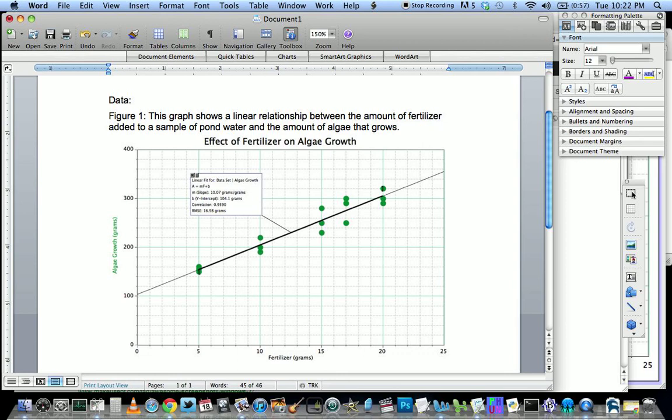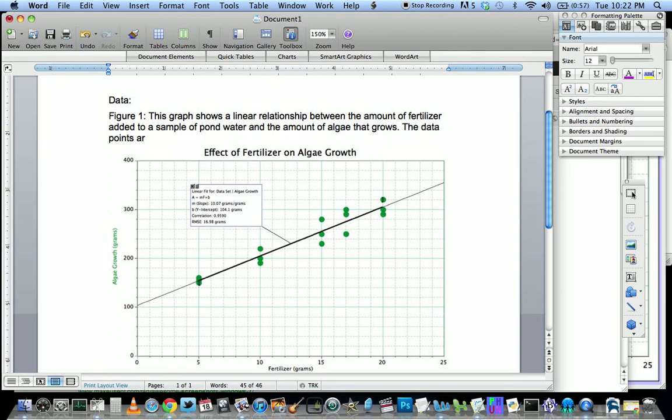So you want to include a little bit of detail. It doesn't have to be long, but one or two sentences is good. You could even include something like the data points are quite variable, but the relationship is still clear.